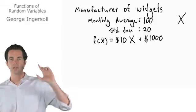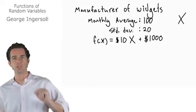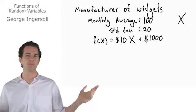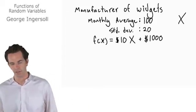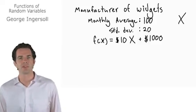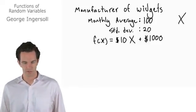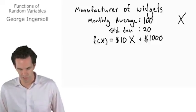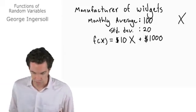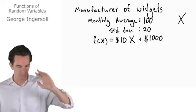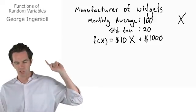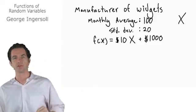So this function says for every widget that we manufacture, it's going to cost us $10. And then we have a baseline cost, based on rent and certain utilities, of $1,000. It's a fairly cheap factory to operate — maybe we're talking in terms of thousands — but we'll just use these numbers. So it's $10 per widget produced, plus $1,000.